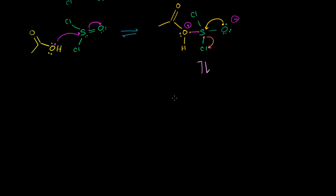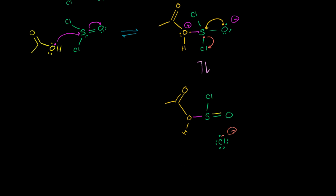After that step, we have the original acetic acid part with the oxygen bonded to a hydrogen, now bonded to the sulfur, which has reformed its double bond to the other oxygen and still has one chlorine. The departing chlorine took its electron, giving it a negative charge. The oxygen bonded to the hydrogen still carries a positive charge.